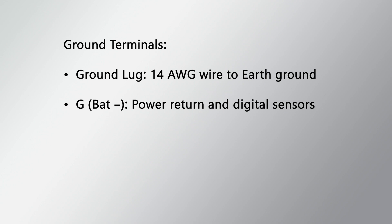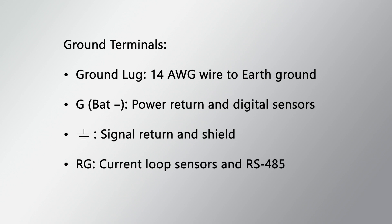In summary, use the ground terminals as follows: Connect a single wire of 14 gauge or heavier to the ground lug and to earth ground. Connect power return wires and digital sensor ground wires to the G or BAT negative. Connect signal ground, sometimes called signal return or analog ground, to ground. Connect shield, sometimes called drain, to ground. Connect 0 to 20 and 4 to 20 milliamp current loop sensors and RS-485 ground to RG.